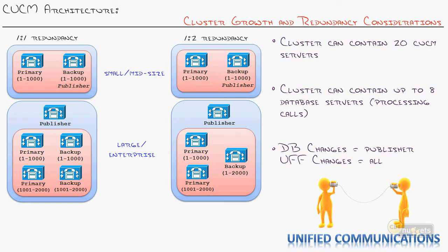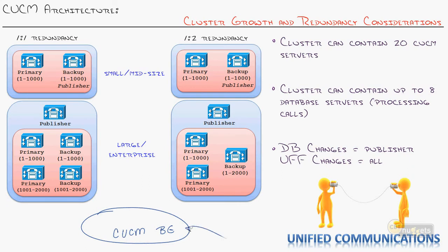We've talked a lot about CUCM clustering options, and I want to hit the topic of redundancy in our clusters. In all but the smallest environments, Cisco suggests having two or more servers. For the smallest environment, they created CUCM Business Edition — a single-server solution, similar to Microsoft's Small Business Server, that bundles Call Manager, Unity voicemail, and advanced mobility options into one box. It's a great product for the price, but it doesn't support redundancy. Once you get beyond that into real networks, you have to have redundancy in place.